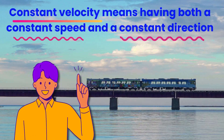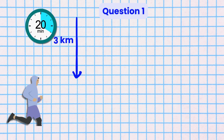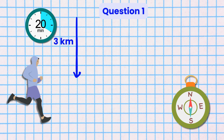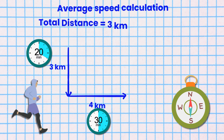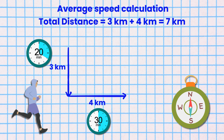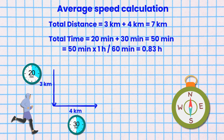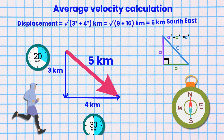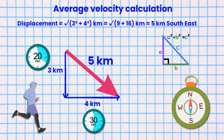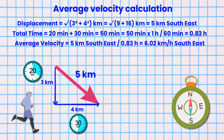Question 1. Isaac jogs 3 kilometers south in 20 minutes then turns and runs 4 kilometers east in 30 minutes. What is Isaac's average speed and average velocity? Total distance equals 3 kilometers plus 4 kilometers equals 7 kilometers. Total time equals 20 minutes plus 30 minutes, so that is 50 minutes, or 0.83 hours. Average speed equals 7 kilometers divided by 0.83 hours, which equals 8.43 kilometers per hour. Since Isaac is jogging at a right angle, his overall displacement equals the square root of 3 squared plus 4 squared, which equals 5 kilometers in the southeast direction. So his average velocity equals 5 kilometers southeast divided by 0.83 hours, which equals 6.02 kilometers per hour southeast.